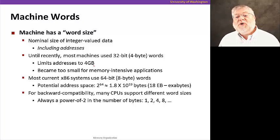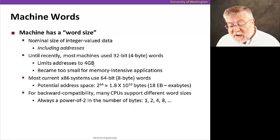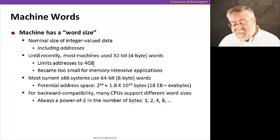This limits addresses to 4 gigabytes. That's how many different numbers we can have in 32 bits. Therefore, how many different addresses that we can have in the memory. This has become now too small for many memory intensive applications. Many of our applications use much more space than that. So, computers have changed to use 64 bit words, 8 bytes long. And now, we can have 2 to the 64 different addresses, which leads to 18 exabytes of data to be addressed. That's a huge amount. And we haven't run into that wall yet. But we probably will one day.